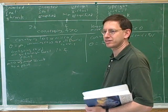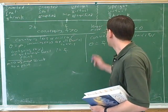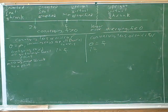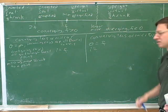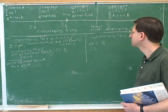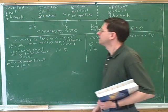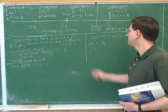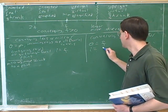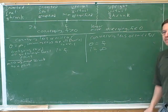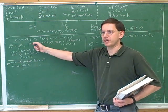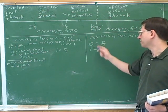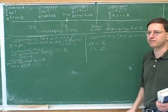It turns out that everything reverses. So if the object was at infinity and the image was at the focal point, symmetry says the reverse should also be true: if the object is at the focal point, the image should be at infinity. Instead of O being infinite and I being the focal point, we have O being the focal point and I being infinite.